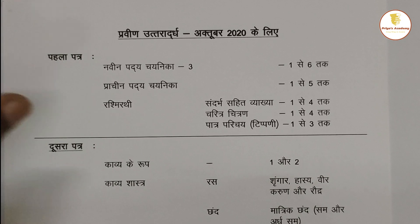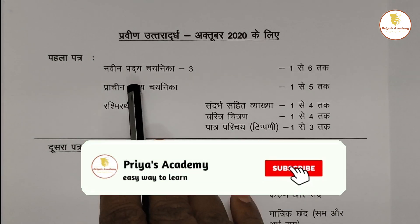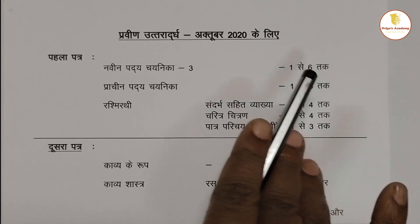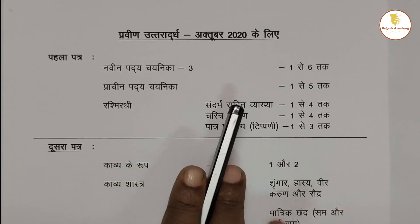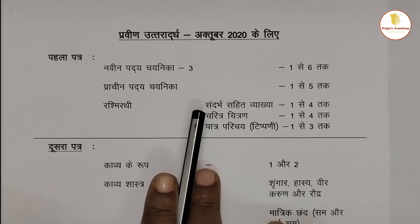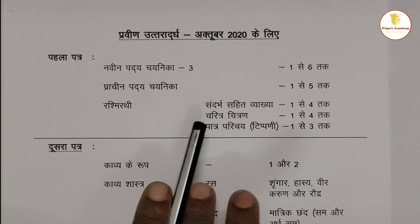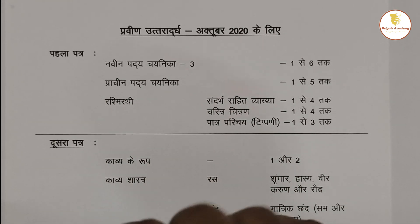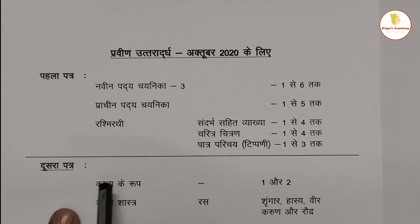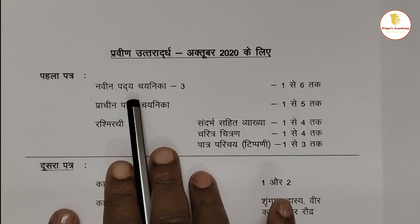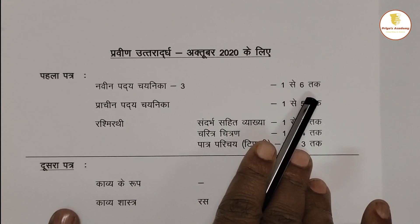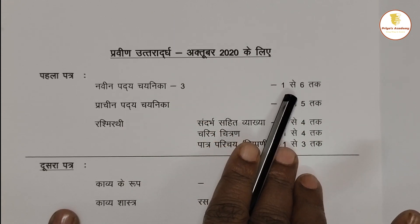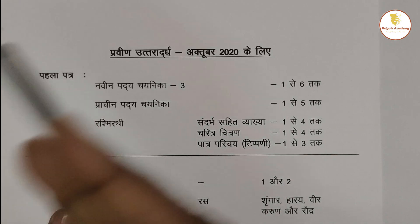There are three books in the first paper — three books in Naveen Padhyay Chaynika. That is part 3, sections 1 to 3. I will explain the first portions and guide you. In Naveen Padhyay Chaynika there are 1 to 6. If you study 6, you can expand it.